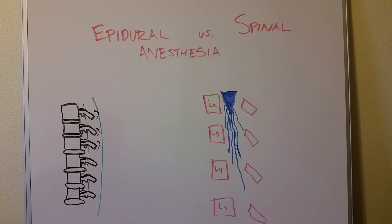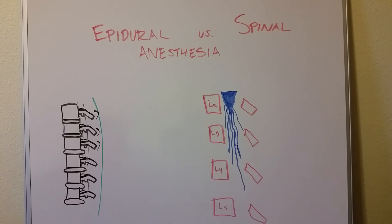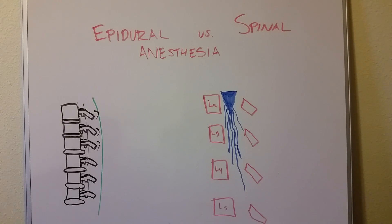Epidurals don't typically give you a full muscular block. They don't actually hit the motor neurons that hard because of the diffusion they have to do. For example, if you're undergoing childbirth and you have an epidural, you might not be feeling a lot of pain, but you probably can still move your legs a little bit and reposition yourself. Obviously this varies by person.